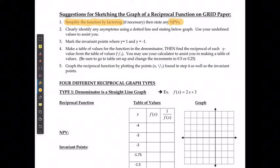I'm going to clearly identify any asymptotes using a dotted line and I'm going to use those undefined or non-permissible values to help me solve for what that would be. I'm going to mark the invariant points where y is equal to 1 or y is equal to negative 1.